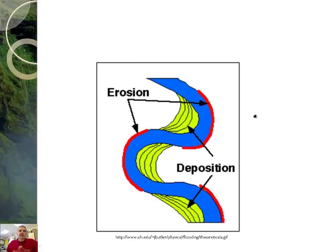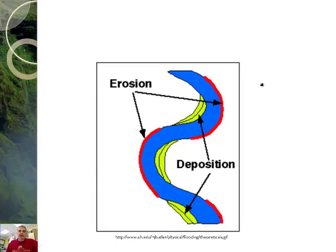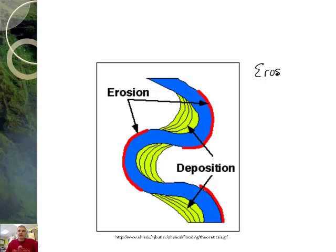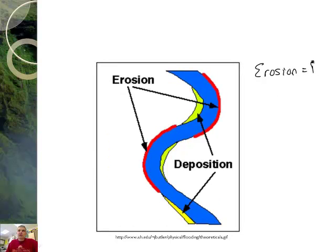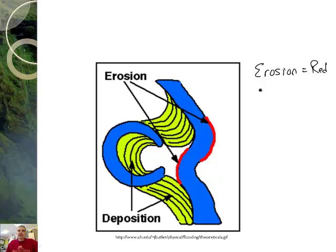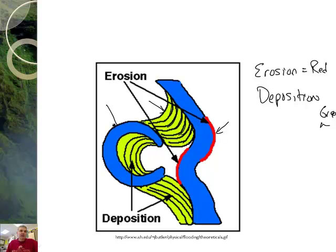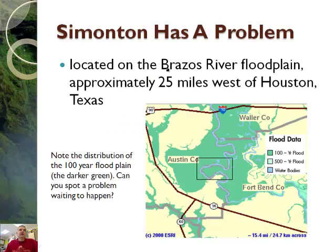Erosion and deposition — erosion happens where the red is, and the green is deposition. You can see layer after layer of deposits of sediment as it went down here, and it's eroding this section. Wherever the bend is, it erodes. And it creates these sort of C-shaped lakes which are called oxbow lakes.